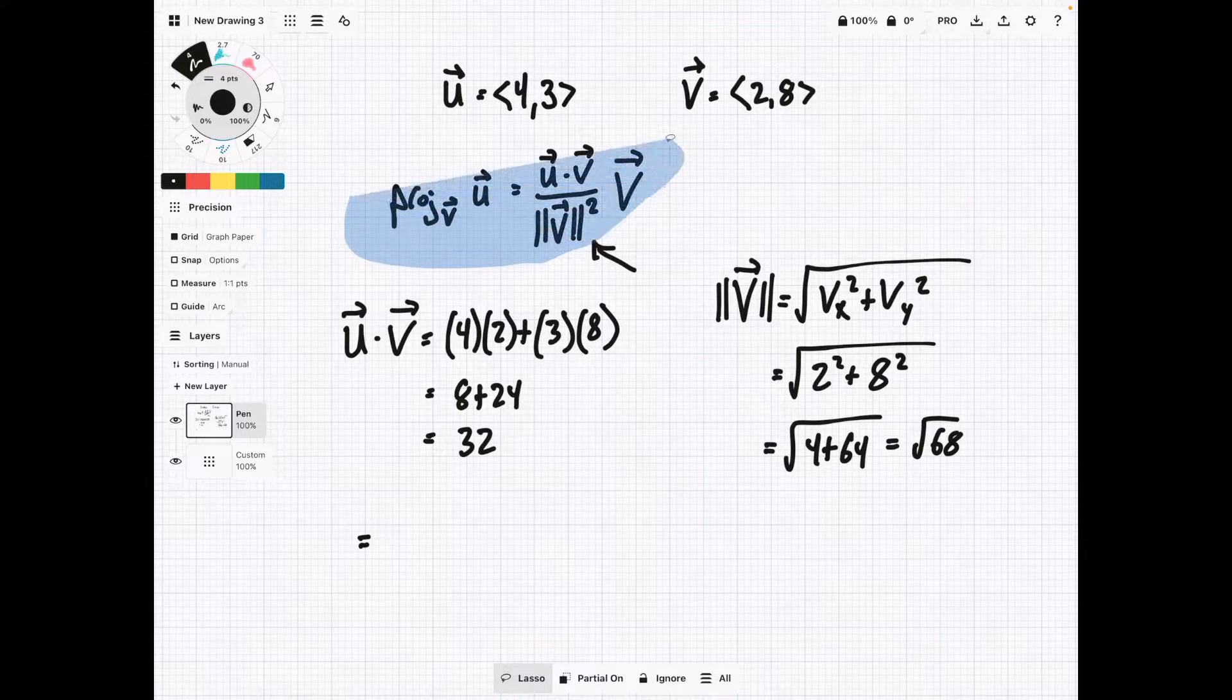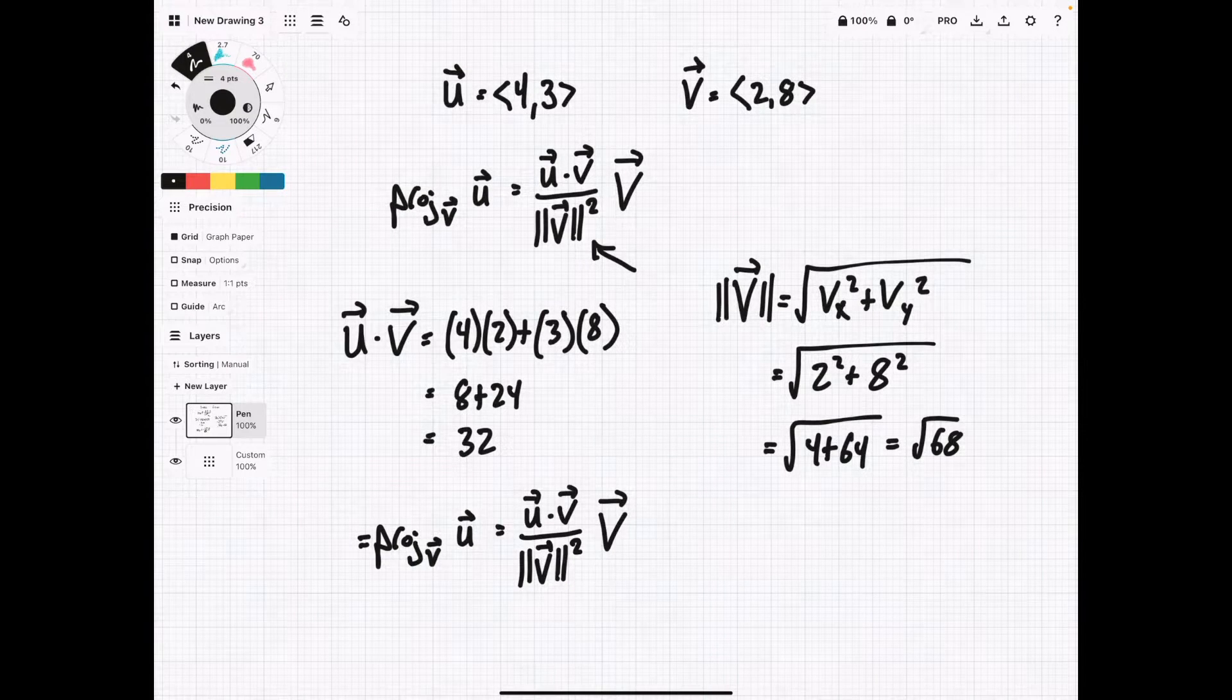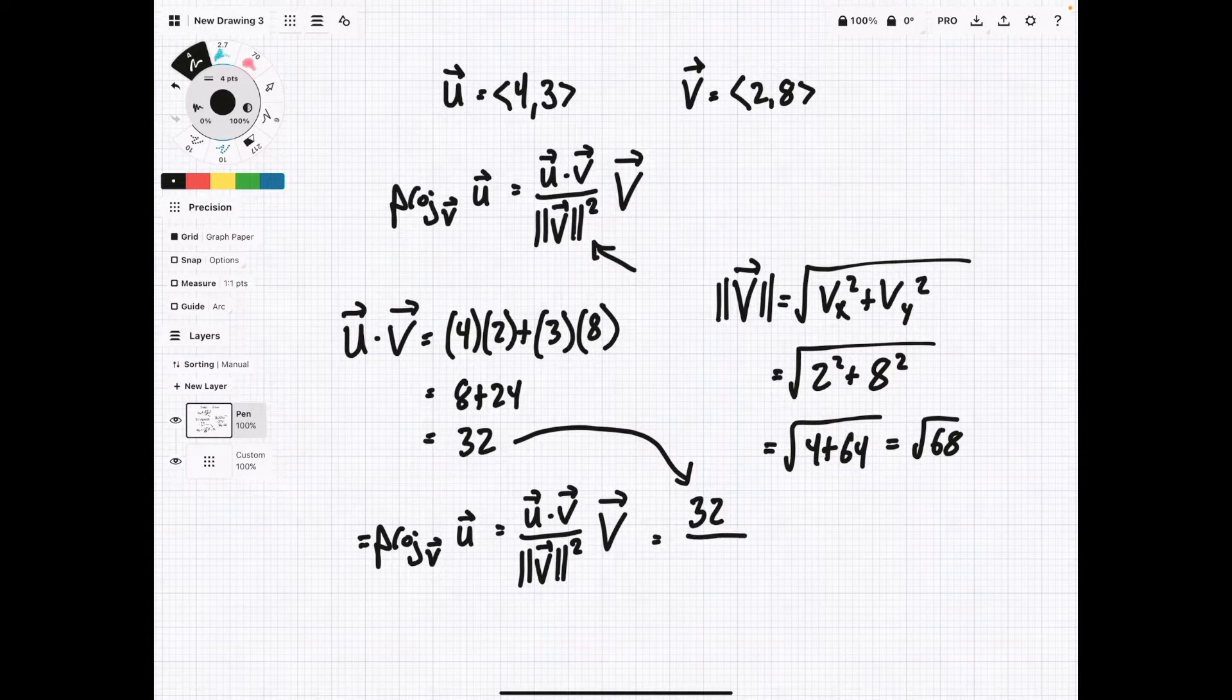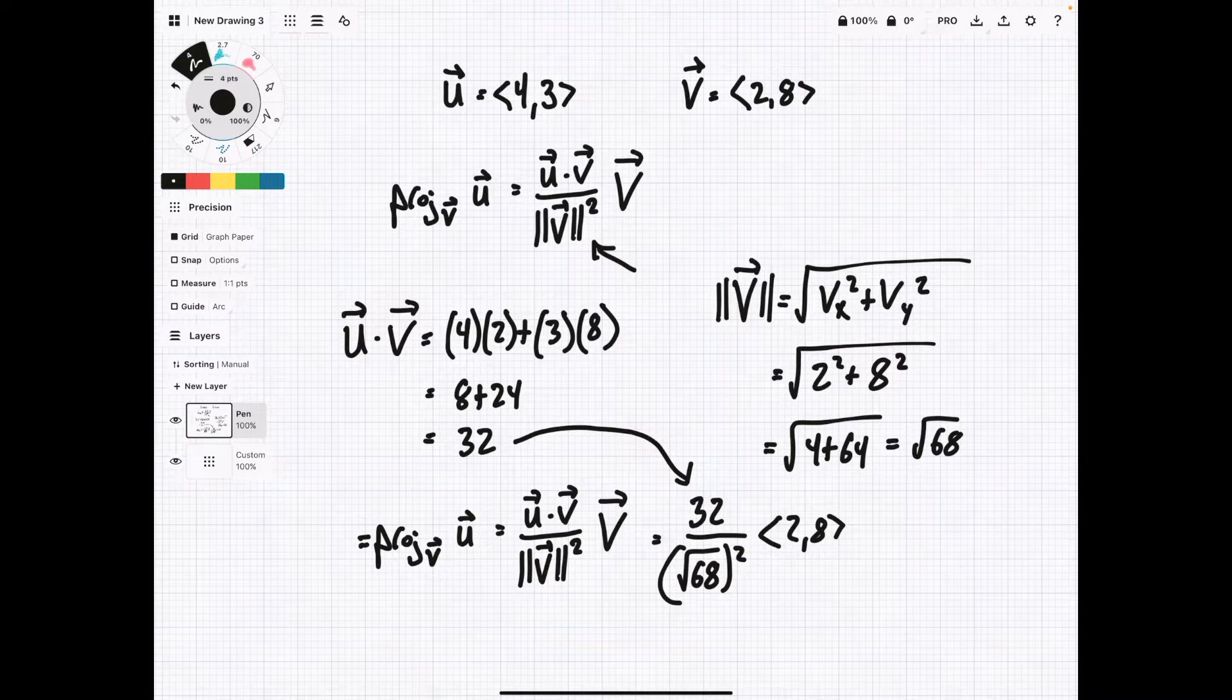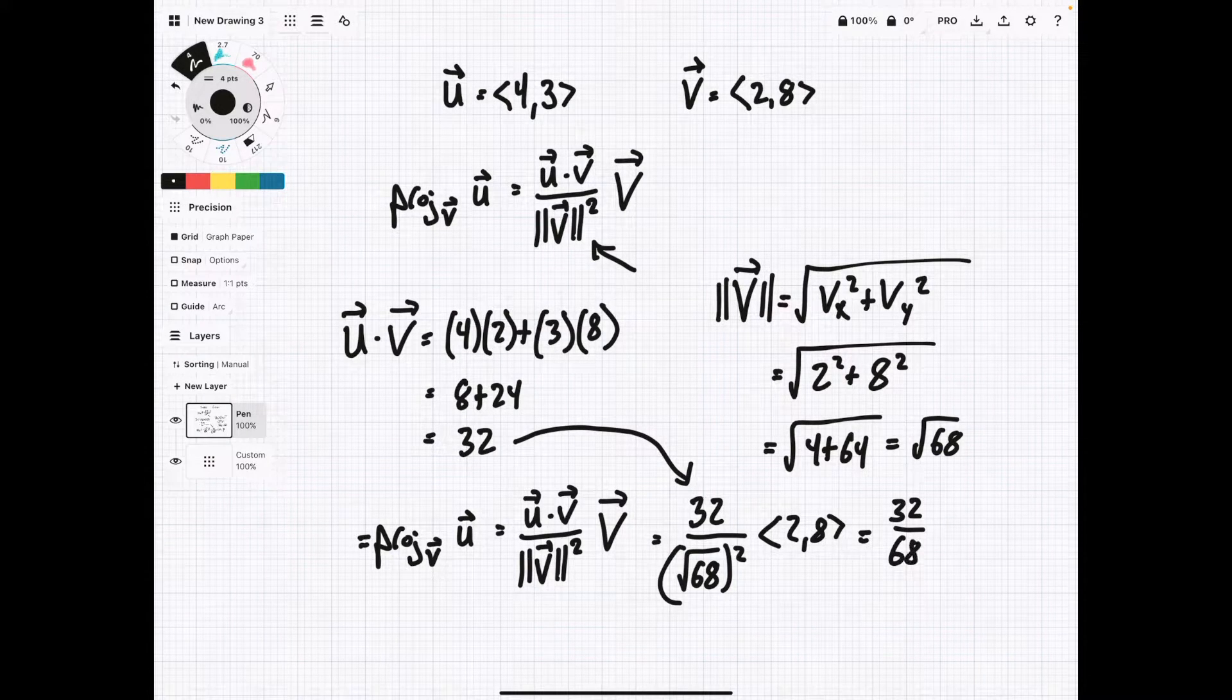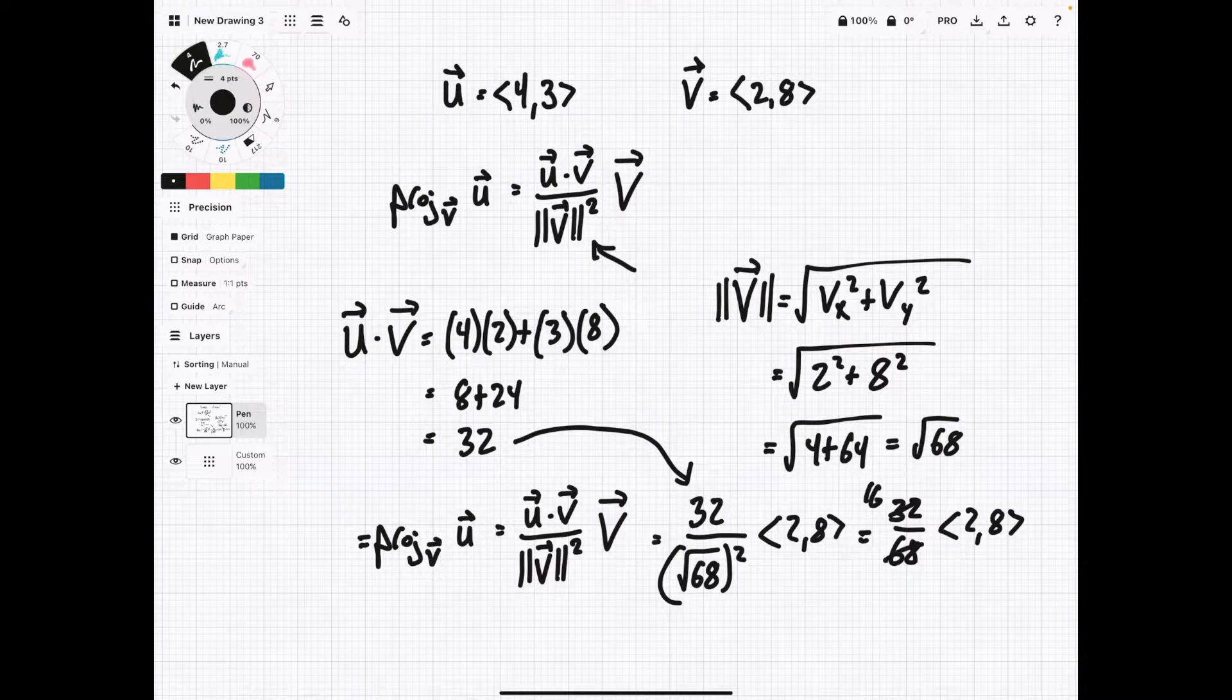So I'm actually going to copy this. All right, so now when we plug things in, we get 32 goes on top here. And then we have over square root of 68, and that's all squared. And then our vector v is still 2 comma 8. So first things first is this square here and the square root, they're going to cancel out. So we'll be left with 32 over 68 times 2 comma 8. And then we can pull one 2 out of here, so that becomes 16, and this becomes 34.